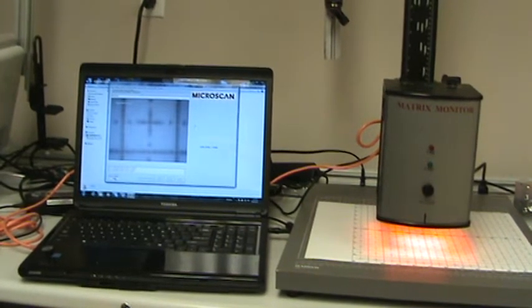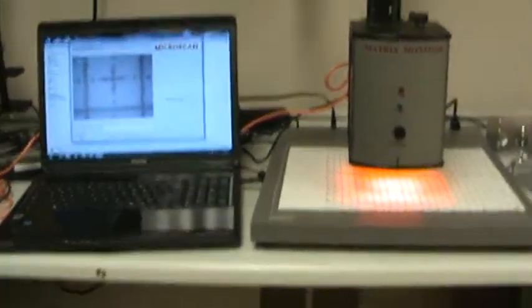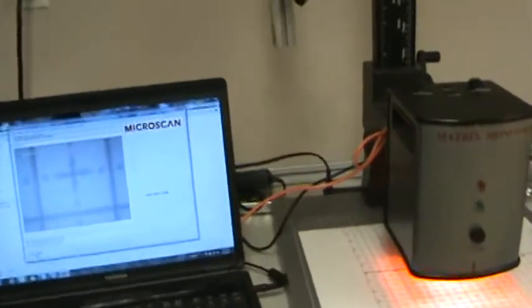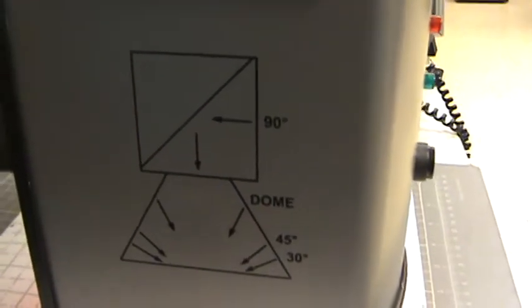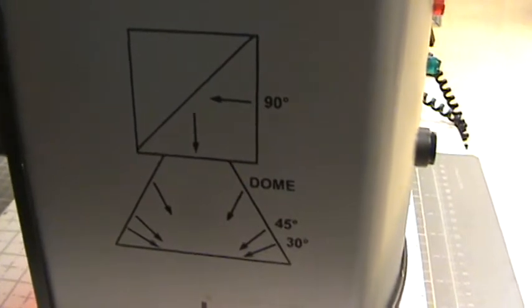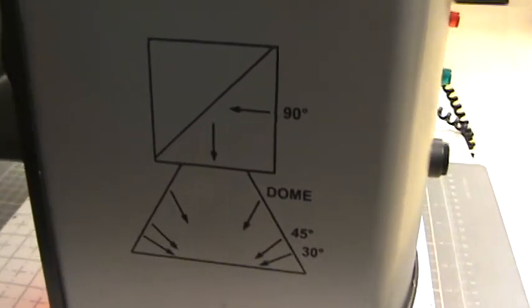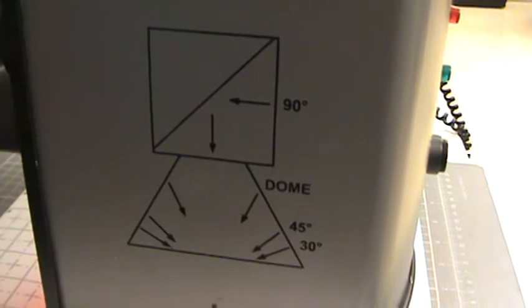I'm going to remove the camera here real quick from the stand to show you this. It will light with ten different options, and you can see by the close-up here we can read it at 90 degrees and with a dome light, a 45 degree light, and a 30 degree light.